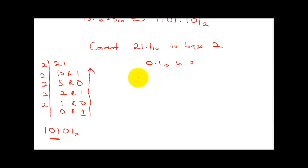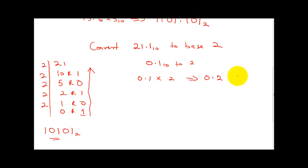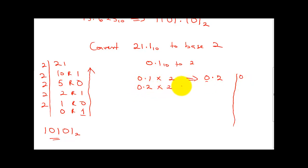To convert 0.1 base 10 to base 2, we repeat the same process. 0.1 multiplied by 2 gives us 0.2 — this is not up to 1, so we take 0 here. Then we bring back 0.2 multiplied by 2, which gives me 0.4, so I take 0 again.